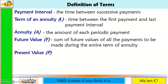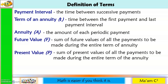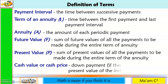Present value, capital letter P: the sum of present values of all the payments to be made during the entire term of the annuity. Cash value or cash price: down payment, if there is any, plus the present value of the installment payments.